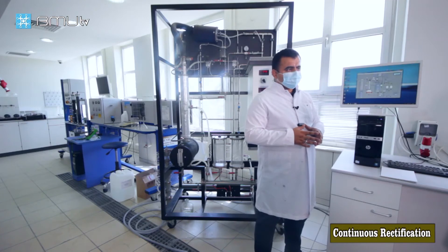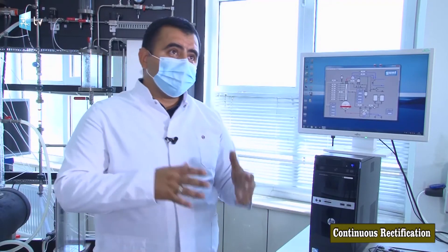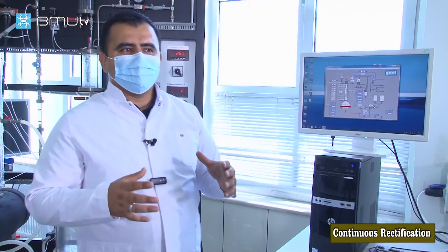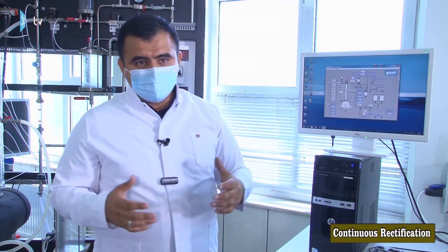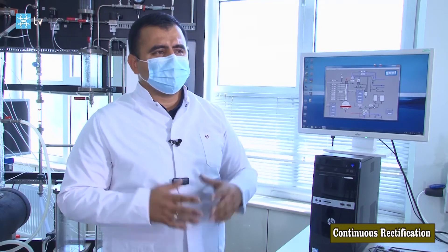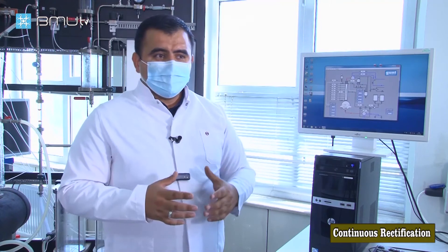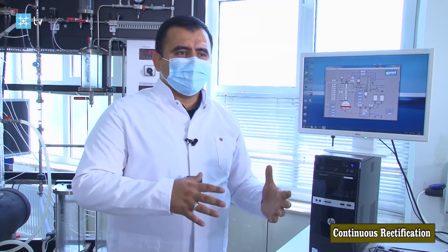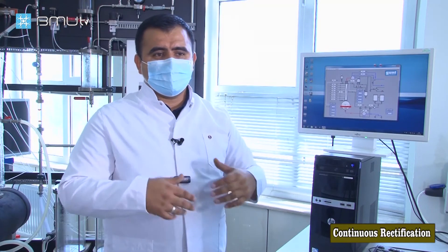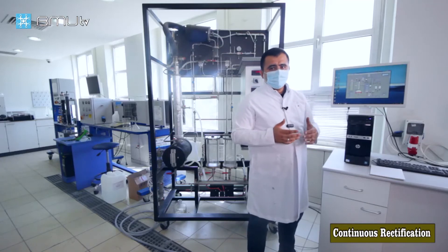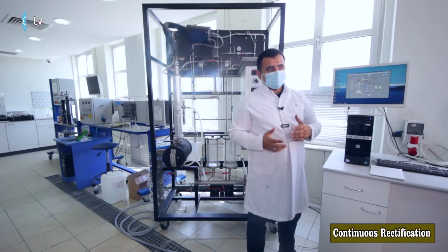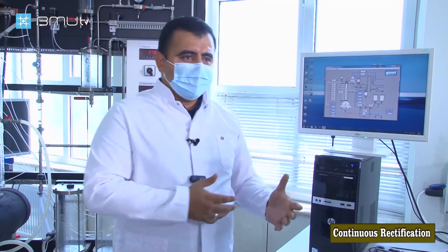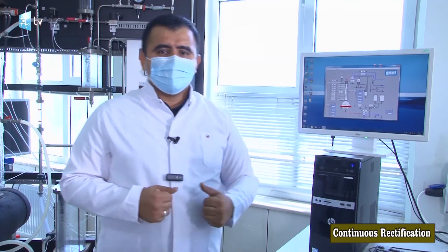Today we will do the batch process experiment. Why not continuous? Generally, batch is used for demonstrations or small-scale production, while continuous is used in industry for high-efficiency, high-volume production. In continuous process, you don't need to cool down the boiler, remove products, and reload each time — it is lower cost. In the laboratory, batch takes less time than continuous, so today we will go with batch.